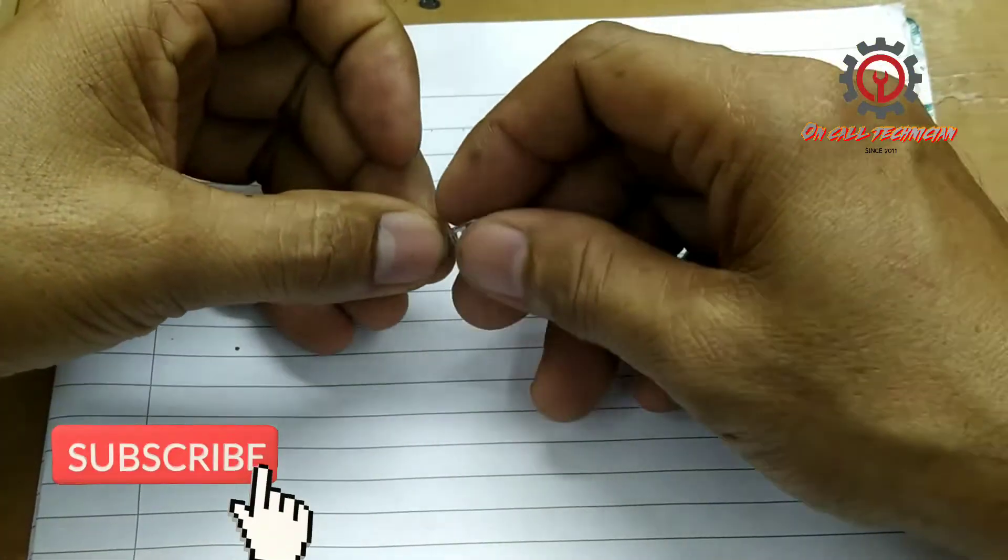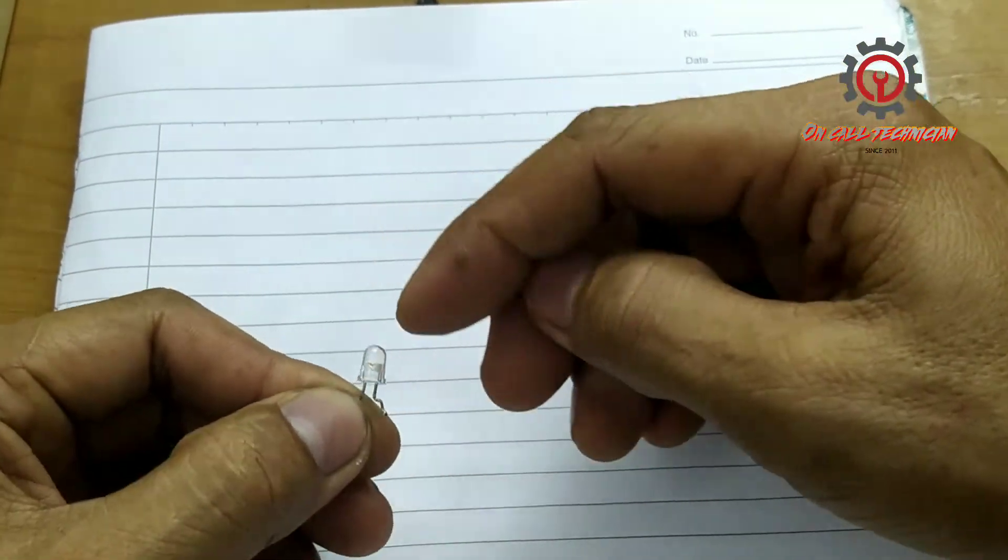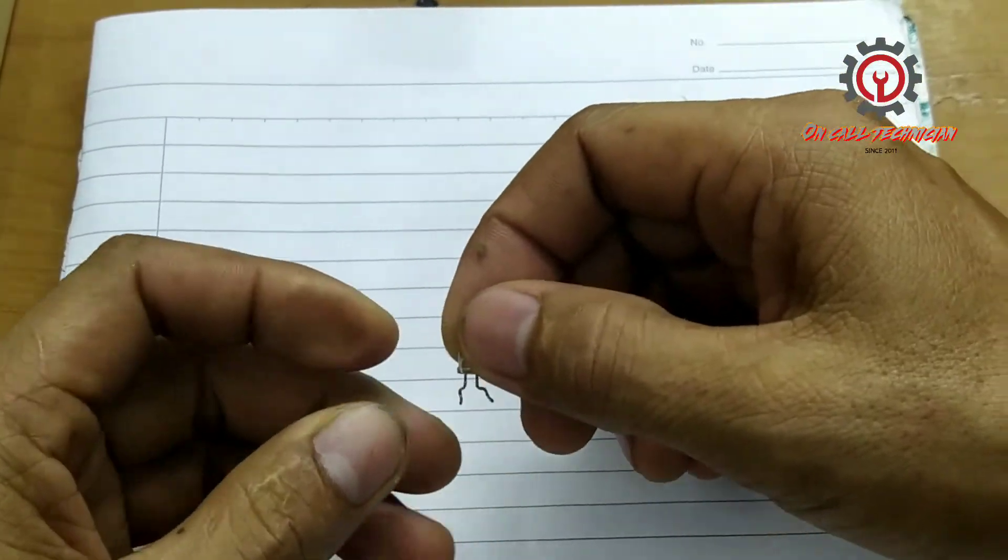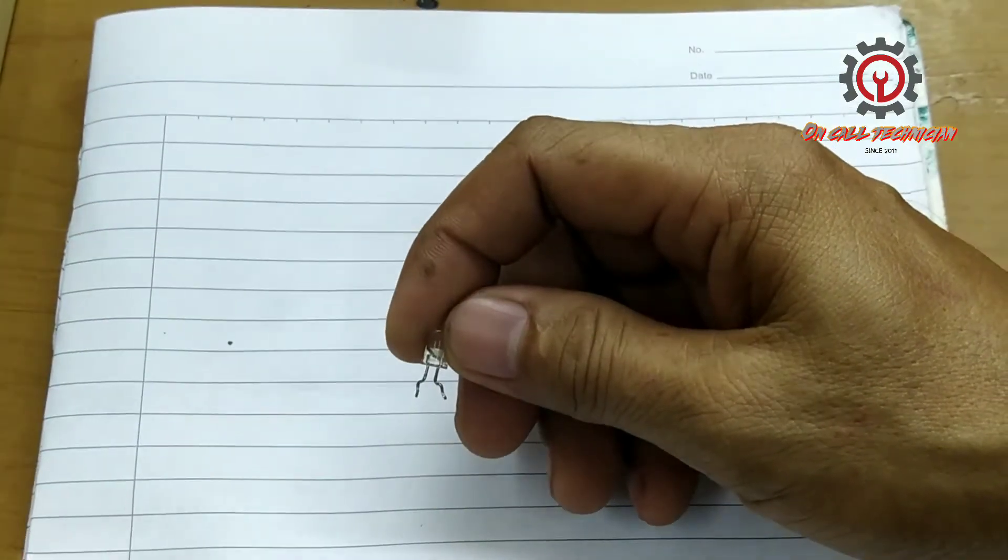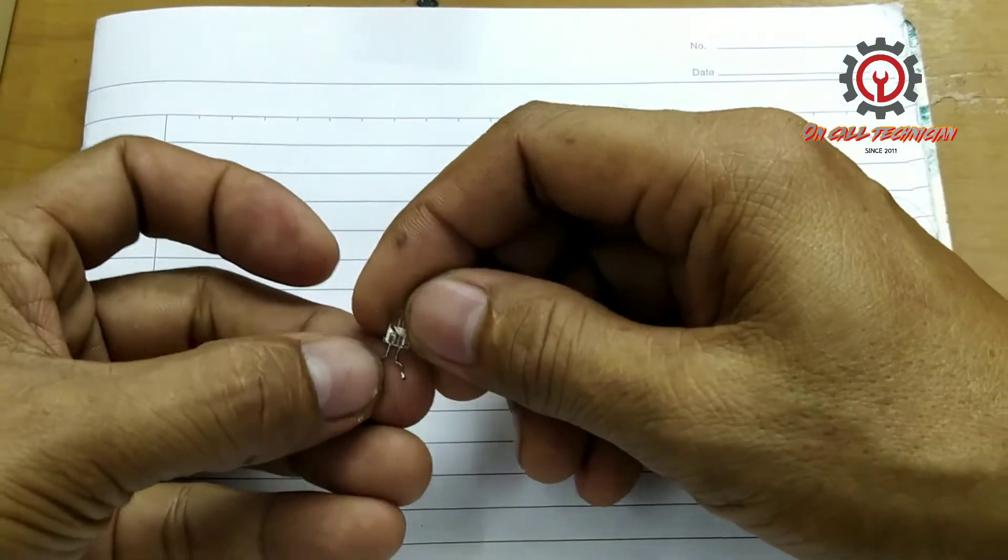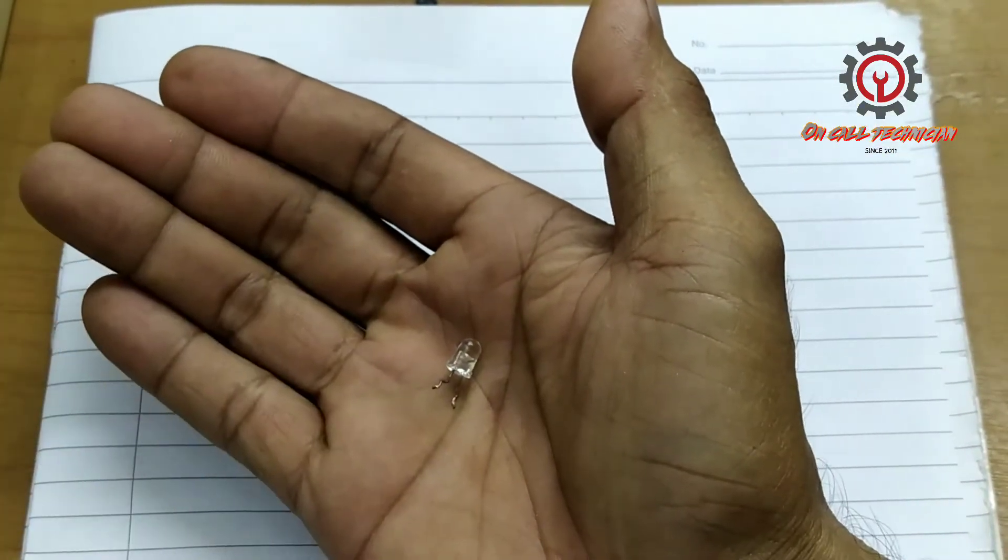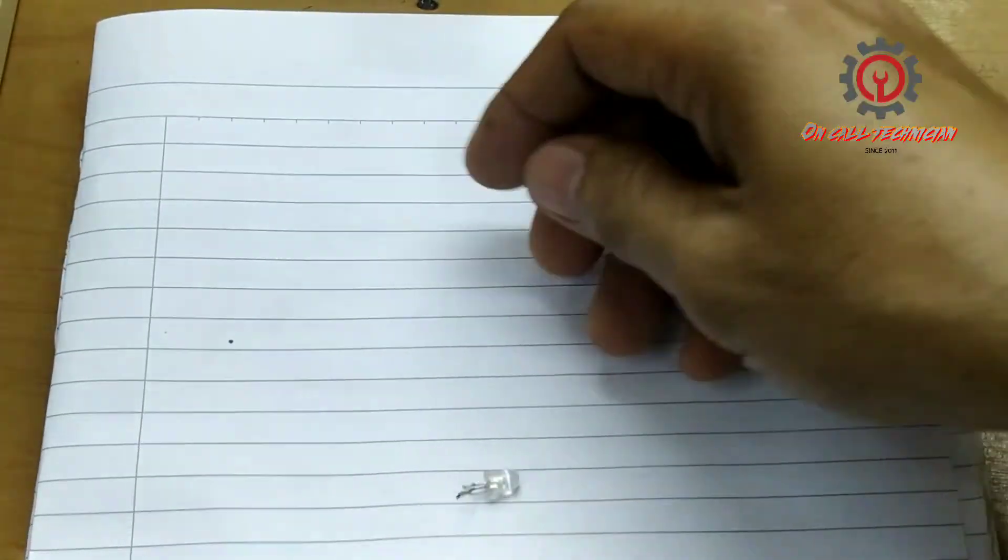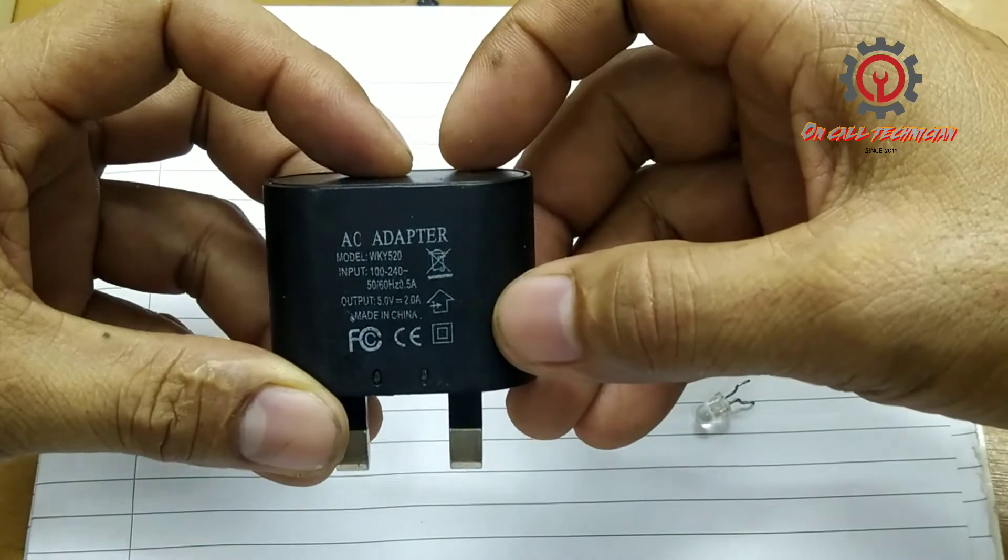Welcome once again guys to my YouTube channel. Today we're going to light this LED with a voltage of 3.4 to 3.8 and a current of 20 to 25 milliamps.